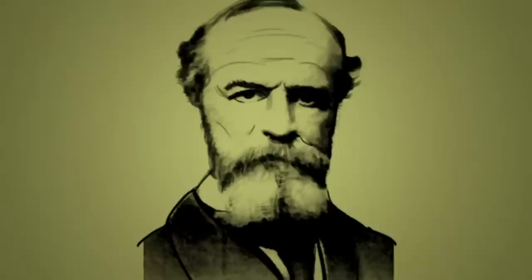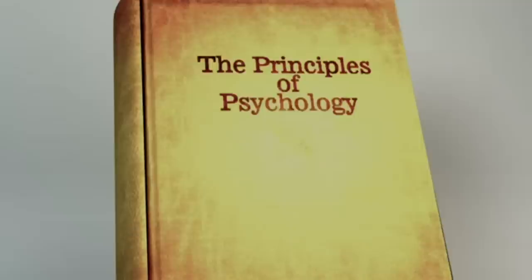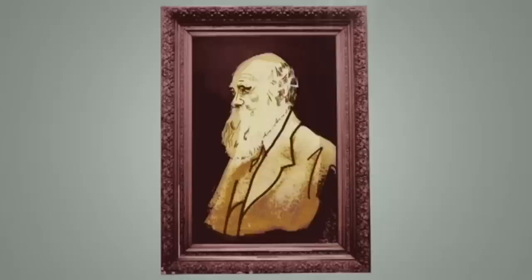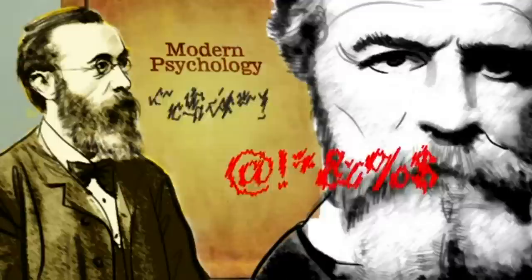In 1890, William James attempted to explain how consciousness functions with his book The Principles of Psychology. Because James' theories attempted to explain the function rather than the structure of consciousness, his approach was appropriately named functionalism. James borrowed heavily from Darwin's ideas that mental processes evolve over time to aid the overall survival of humans. Although early psychologists disagreed over how to conduct research, these clashes led to improvements in the science and shaped the methods used today.